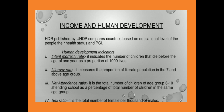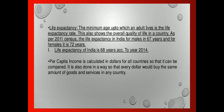Sex ratio is the total number of females per 1,000 males. Life expectancy is also an important term — it refers to the minimum age up to which an adult lives and shows the overall quality of life in a country. As per the 2011 census, life expectancy in India is 67 years for males and 72 years for females, and 68 years overall according to 2014 data. Per capita income is calculated in US dollars for all countries so that it can be compared, and every dollar buys the same amount of goods and services in any country.